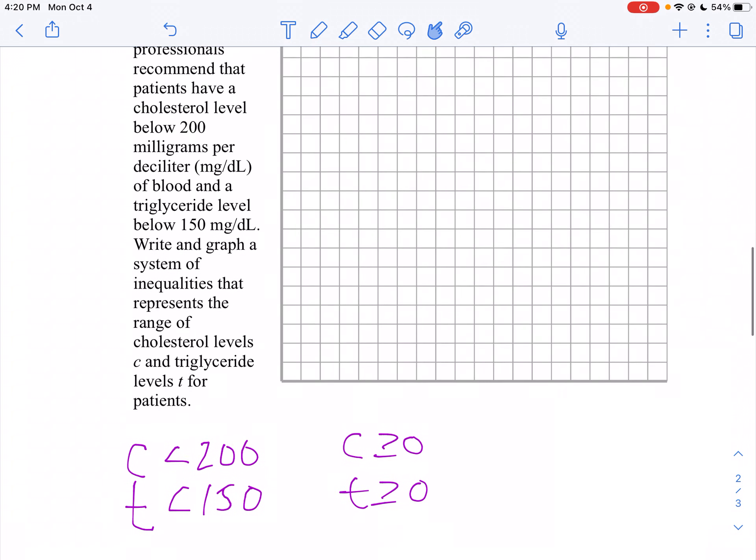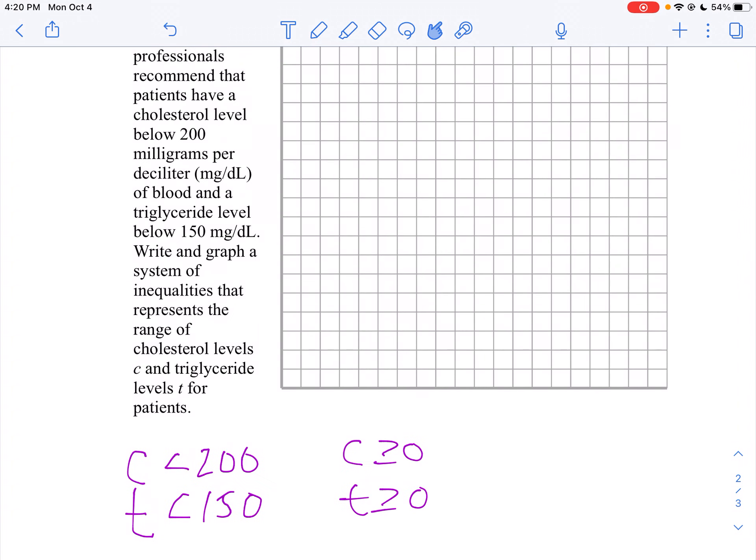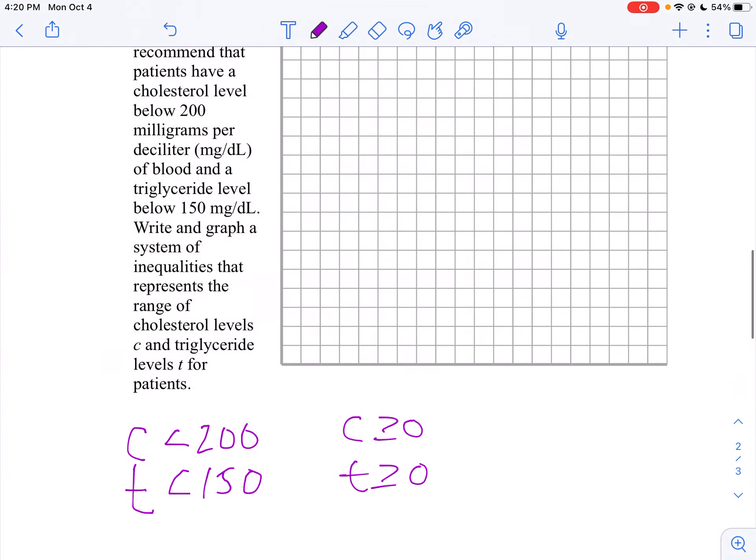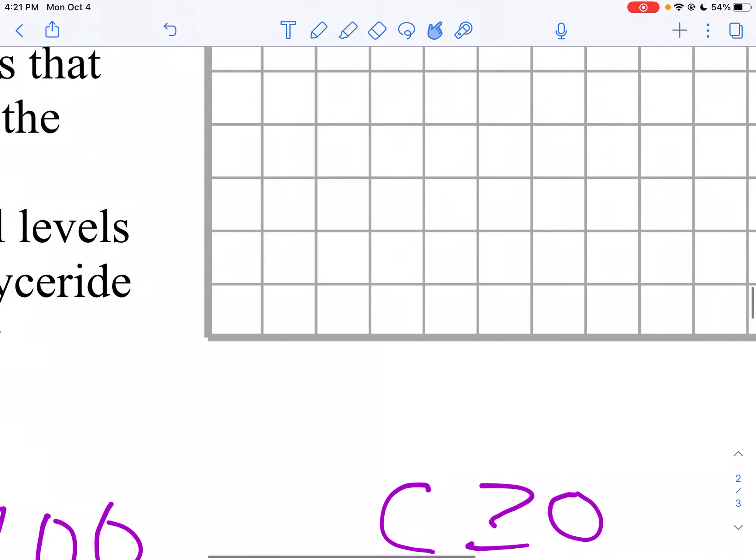So I'm going to put C, my cholesterol, on the x-axis. I want to go up to 200, so I'll count by 50s: 0, 50, 100, 150, 200.